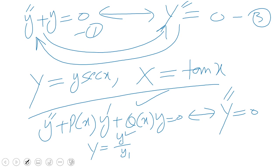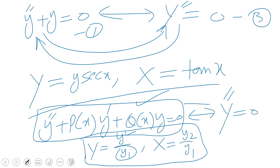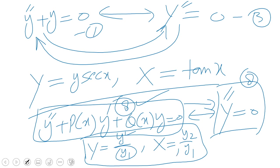In general, for any equation y'' + P(x)·y' + Q(x)·y = 0, we can transform it to Y'' = 0 by taking Y = y/y1 (where y1 is the first element of the fundamental set) and X = y2/y1. By this transformation we can always go from one equation to the other, so all linear homogeneous second-order ODEs admit 8 symmetries regardless of their form.